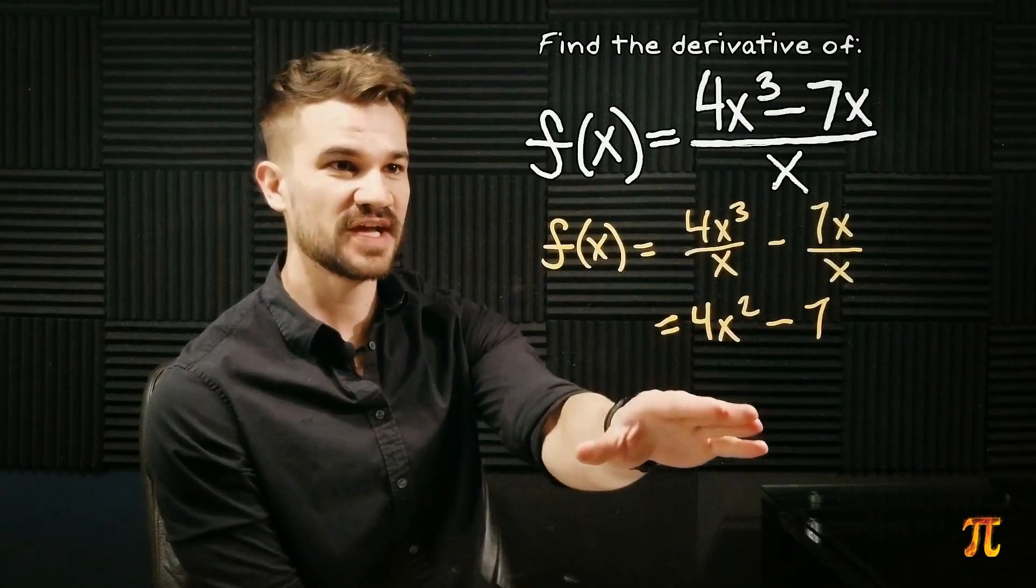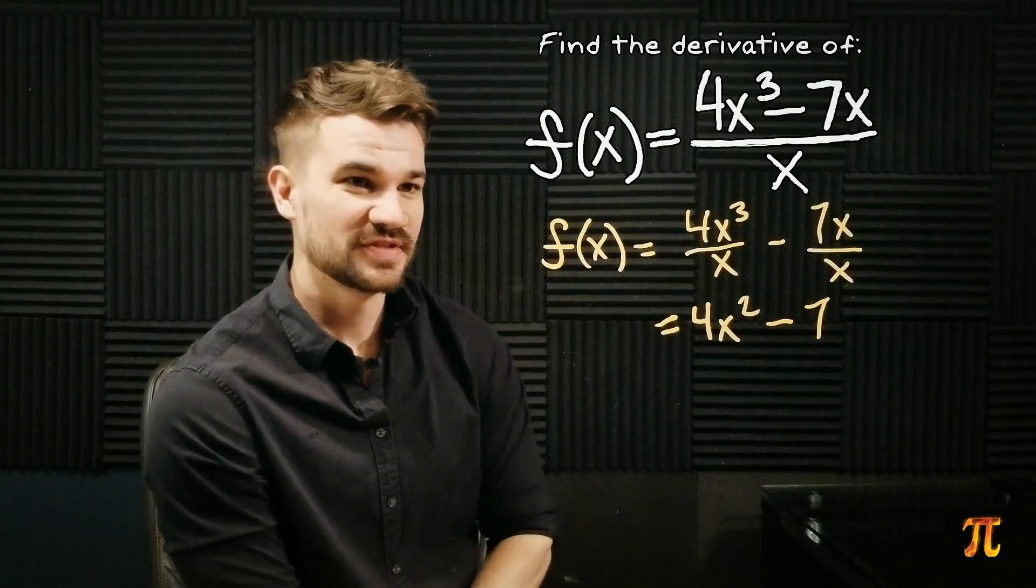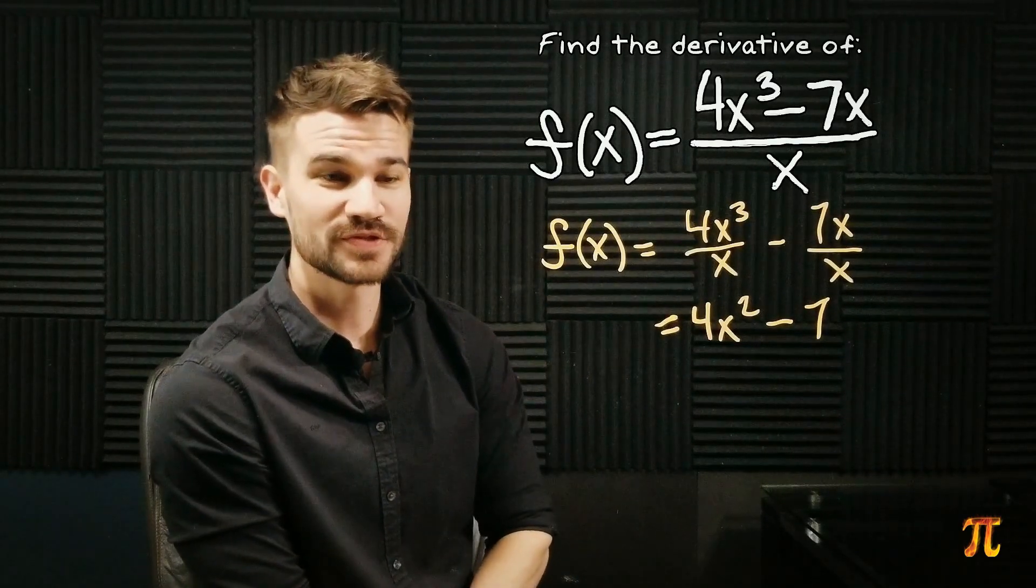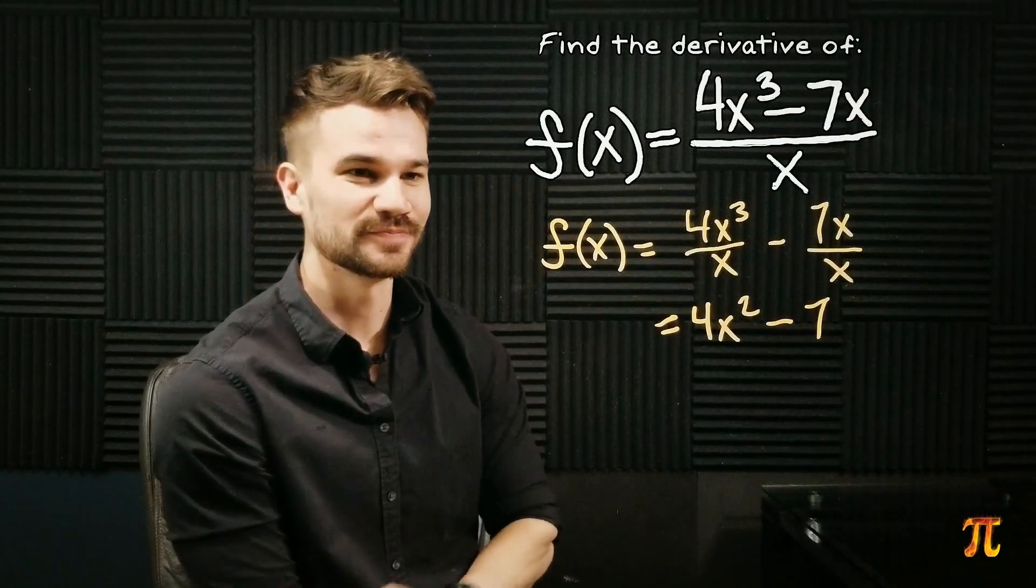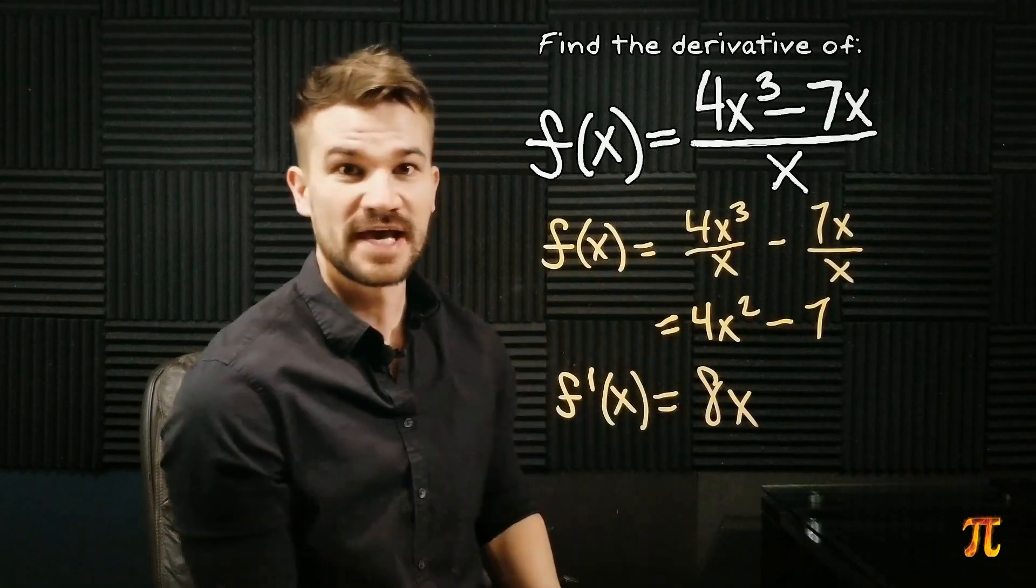So this is the function f rewritten in a different way that is more to our advantage. Now we take the derivative. No quotient rule needed, it's just a power rule and we're done.